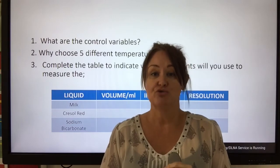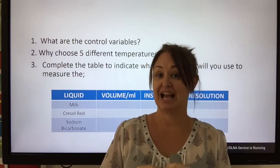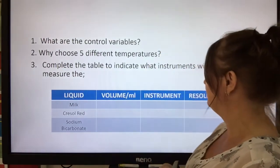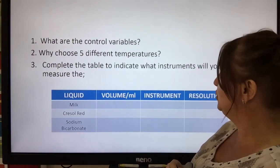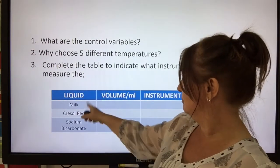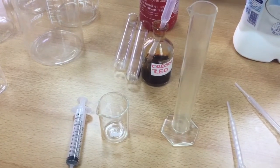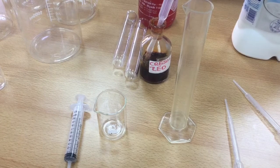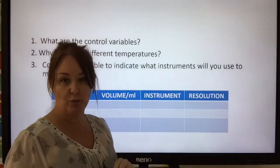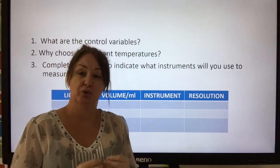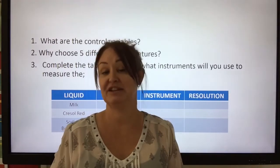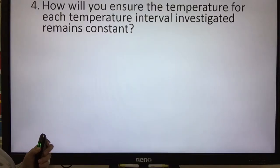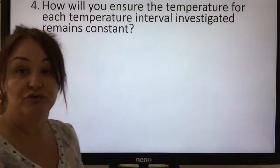If we've got a graph, we can read off different temperatures that we haven't actually investigated and get an idea of what the result would be. Now complete the table to indicate what instruments you will use to measure the milk, the Cresol Red, and the sodium bicarbonate. We need to think about resolution — the minimum interval of your instrument. You wouldn't use a 250ml beaker going up in increments of 50ml to measure 0.8ml. You might use a syringe that measures to a tenth of a ml.